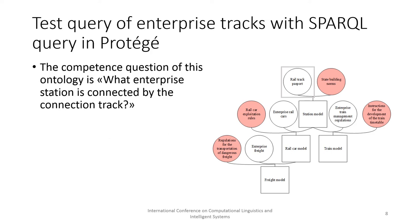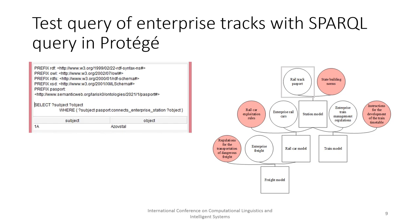A SPARQL query corresponding to a competency question was developed as a test, and the expected answer was obtained — more specifically, what enterprise stations are connected by a connection track.